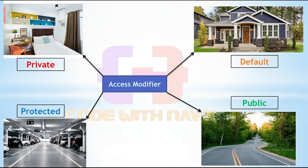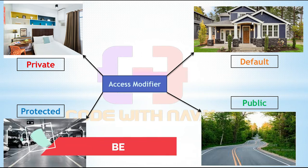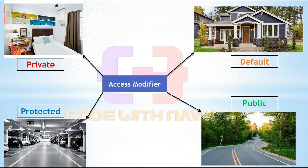Let's see a real-life example. Consider you have your own private room. Only you have the key to that room. That means this room is your private room. No one can access it other than you. Then you have your home. All your family members can access this home — they all have a main door key. We can see this home has default access.